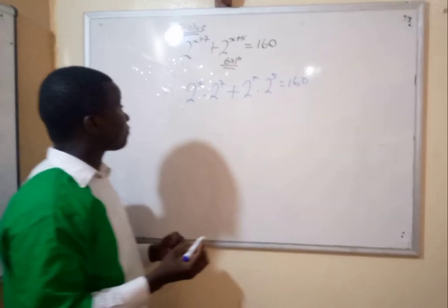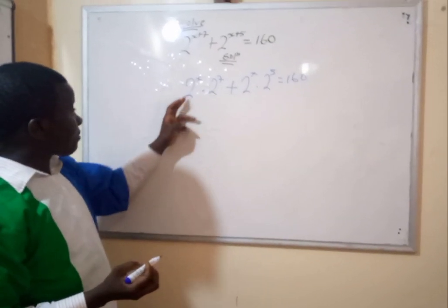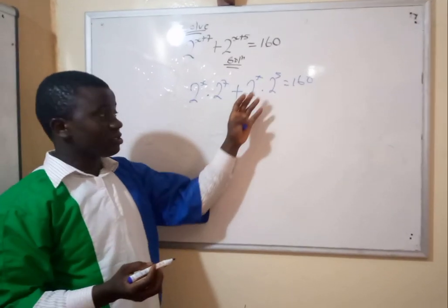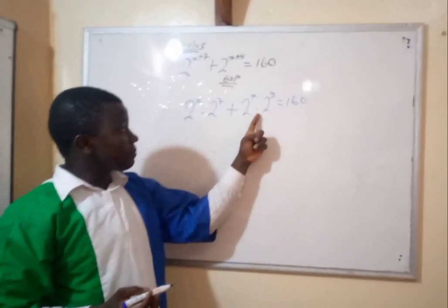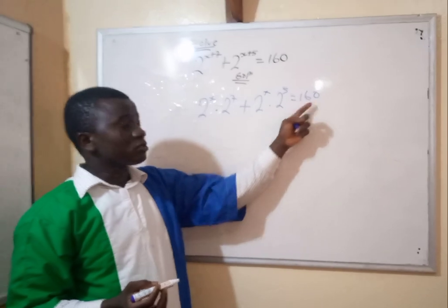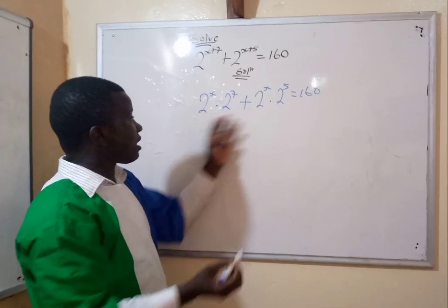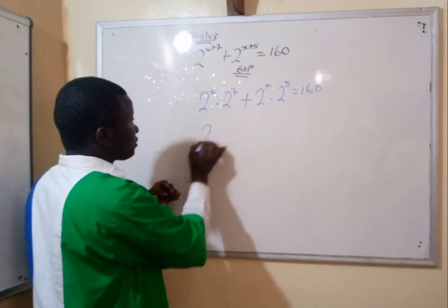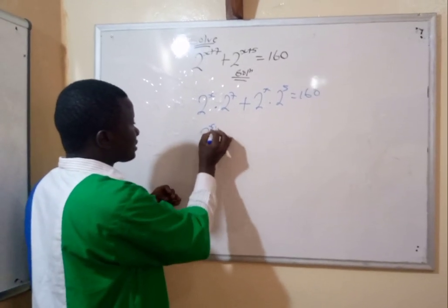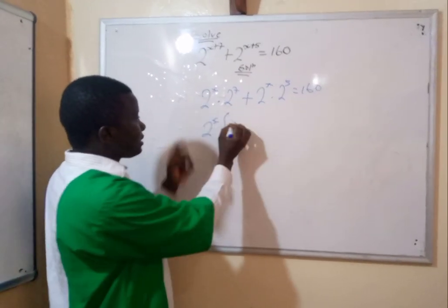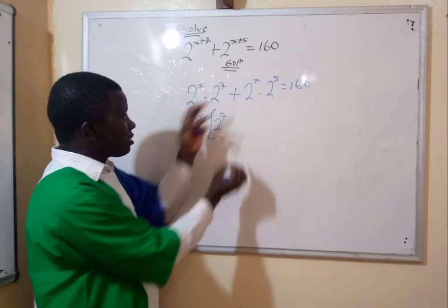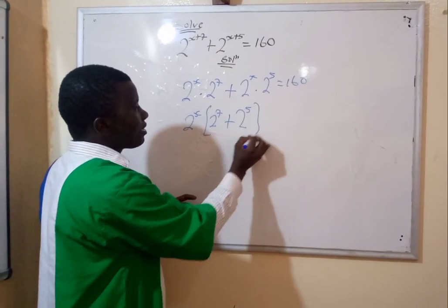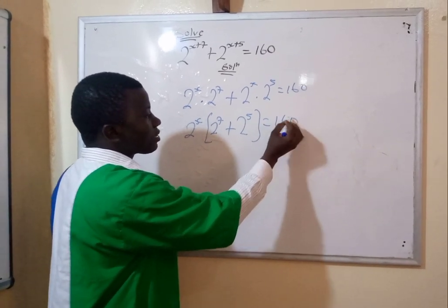Now you have 2 to the power x multiplied by 2 to the power 7, plus 2 to the power x multiplied by 2 to the power 5, equals 160. In this case you have to factorize. You factorize out 2 to the power x, so this becomes 2 to the power x times the quantity 2 to the power 7 plus 2 to the power 5, equals 160.